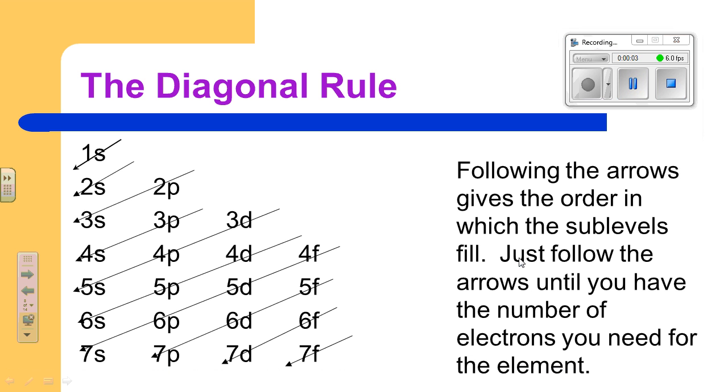In this video we're going to do an example of an electron configuration using the diagonal rule to follow along the order in which the sub-levels fill. So let's review the diagonal rule.